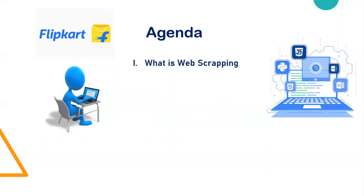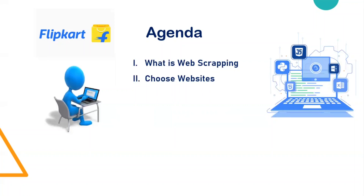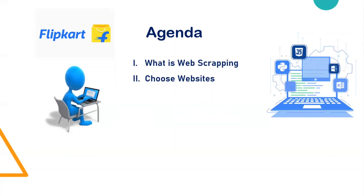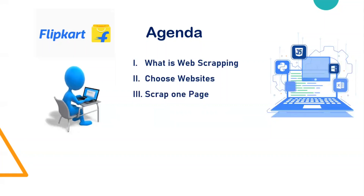First we'll try to understand exactly what web scraping is, and then we'll choose a particular website. In this project we are choosing the Flipkart website and one particular product — a mobile phone, that's an iPhone. After that we'll collect all kinds of information labeled on Flipkart, and choose one particular page to scrape all the information.